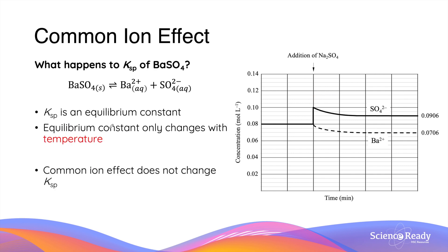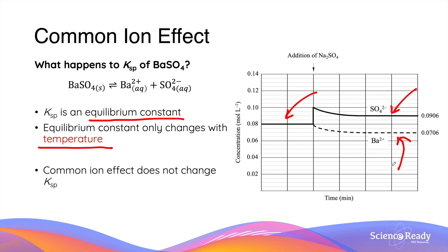Now that we've understood how ion concentrations change in the common ion effect, what about the solubility product constant Ksp? Remember that Ksp is the equilibrium constant for solution equilibria, so the actual value only changes with temperature. Therefore, the common ion effect does not change the Ksp of an ionic compound — in this case barium sulfate — despite the fact that the ion concentrations change as a result of the common ion effect. If you calculate the Ksp using equilibrium concentrations of barium sulfate ions before the common ion effect and compare it to the Ksp calculated at the new equilibrium after the common ion effect, they will be equal in number.